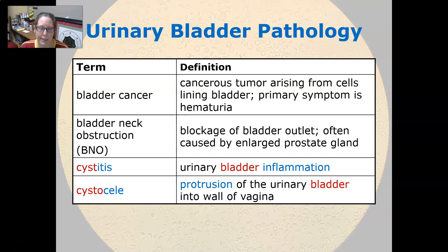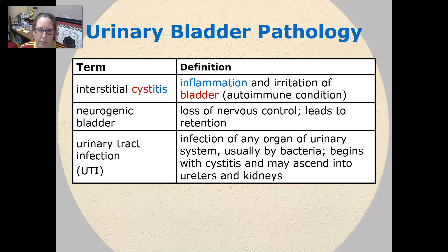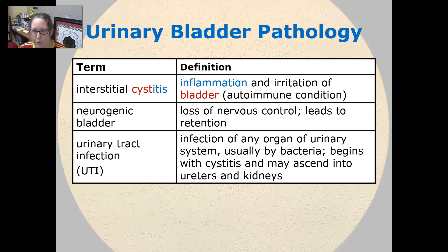Cystitis is often an infection, though 'itis' always means inflammation. Cystocele is the protrusion of the urinary bladder into the wall of the vagina. Interstitial cystitis is an inflammation and irritation of the bladder; it is actually an autoimmune condition. Neurogenic bladder is a loss of bladder control due to nervous system dysfunction.